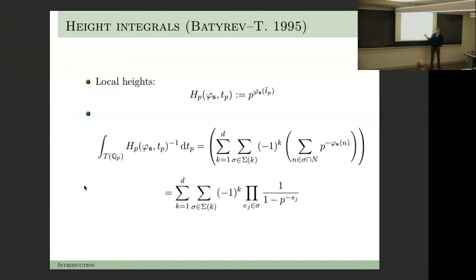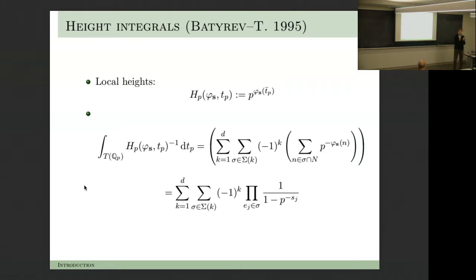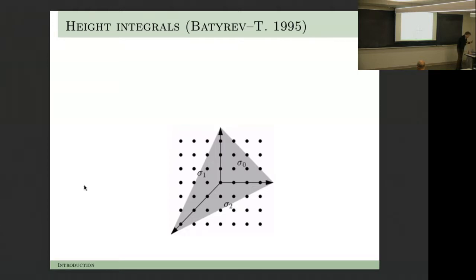If you untangle this formula similarly to before, what you find is that for special values—namely if you put all the s_j equal to 1—you find exactly the number of F_q points of the toric variety over p to the dimension. Each of the terms is essentially the number of F_p points of the strata corresponding to one-dimensional strata divisors, two-dimensional strata corresponding to intersections of divisors, and they're all toric. So for each toric stratum, we're finding essentially p minus 1 and so on.